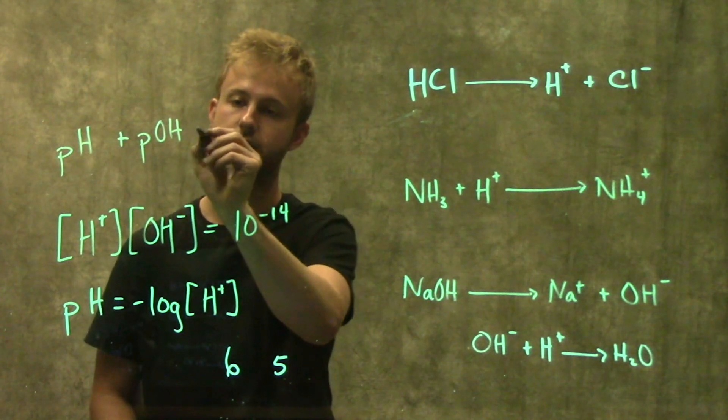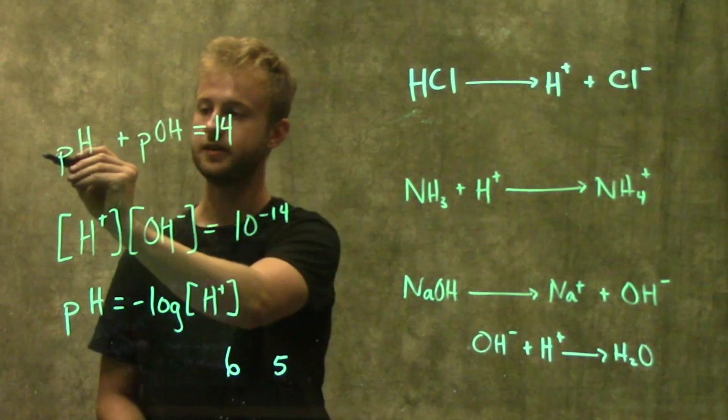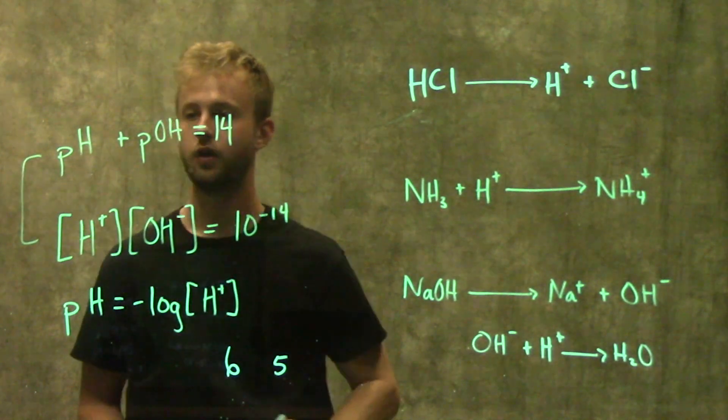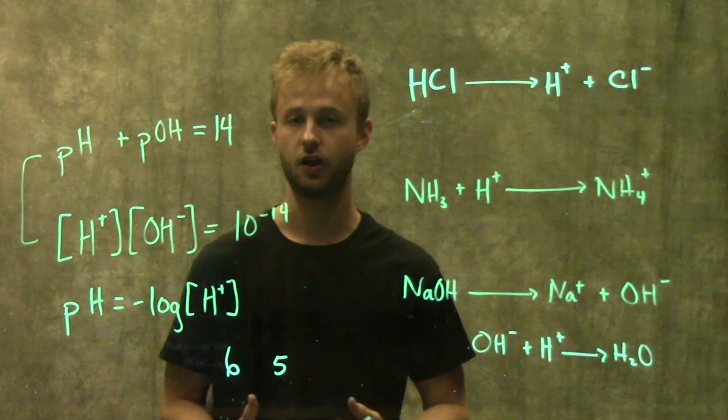The second is that your pH, which is negative log of the hydrogen ion concentration, plus pOH, which would be the negative log of the hydroxide ion concentration, equals 14. Both of these only work when water is at 25 degrees Celsius and the solution is aqueous.